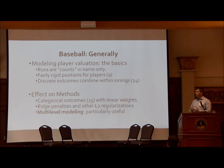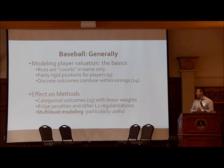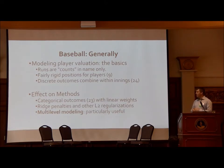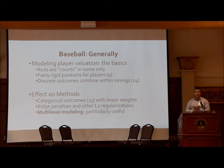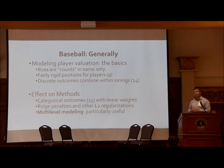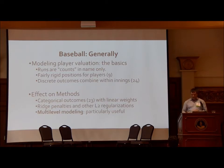How does this affect how we model baseball? We end up having 23 categorical possibilities — 23 Retrosheet codes — and we assign them linear weights, which is the average result in terms of runs each inning when one of these events occurs. We tend to use level-two regularizations — ridge regression is the more common term. We are more interested in shrinking people toward a mean than shrinking them all the way to zero, and this is why multi-level modeling tends to be pretty useful.